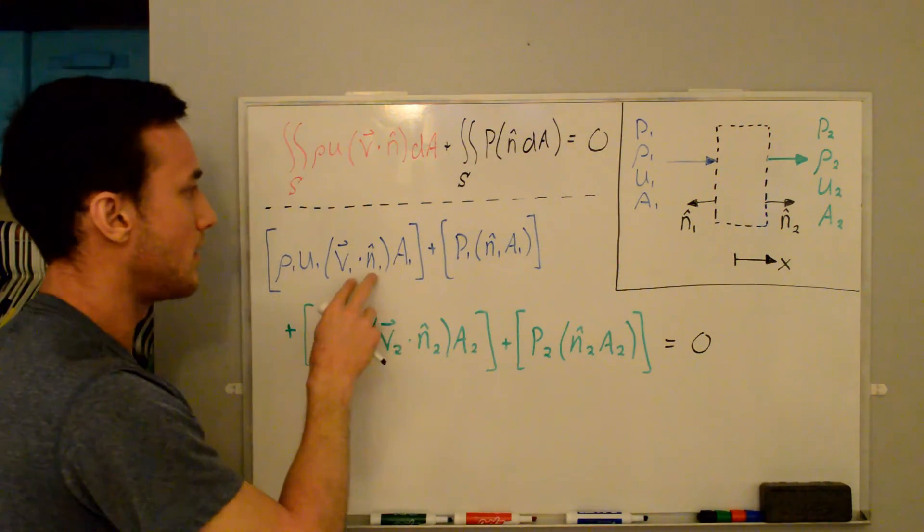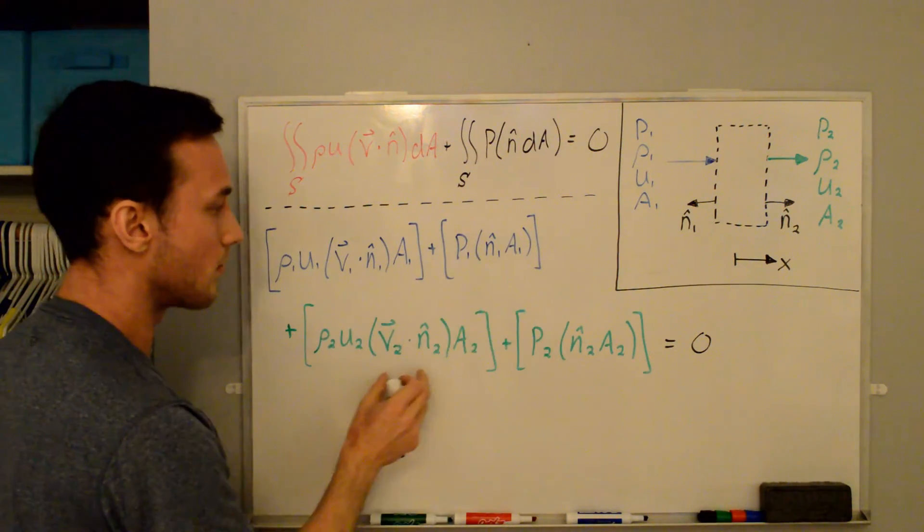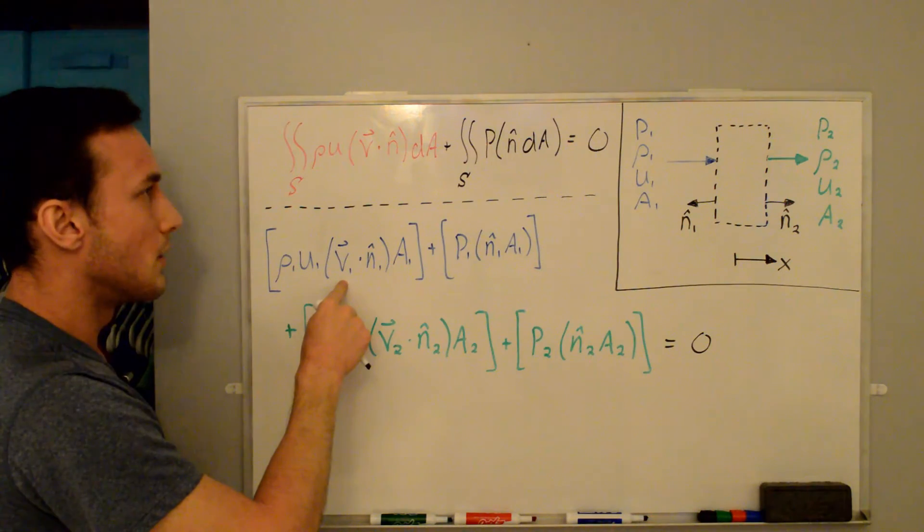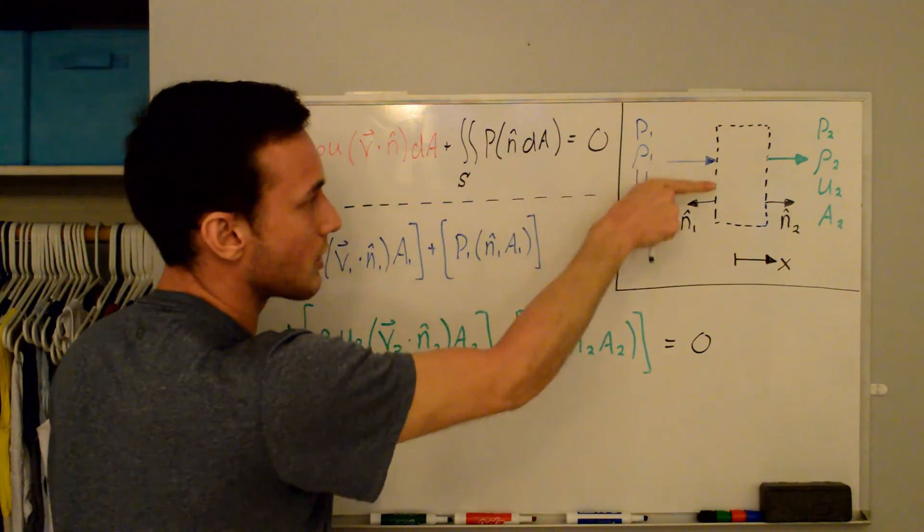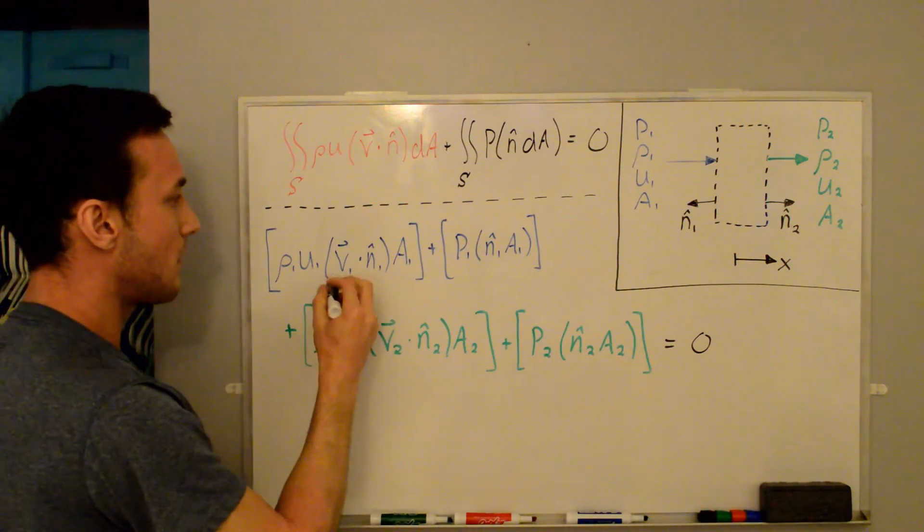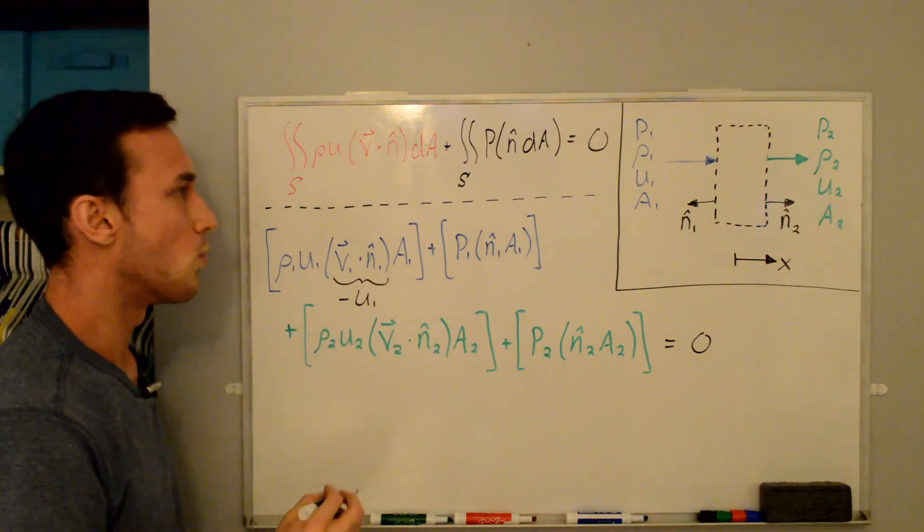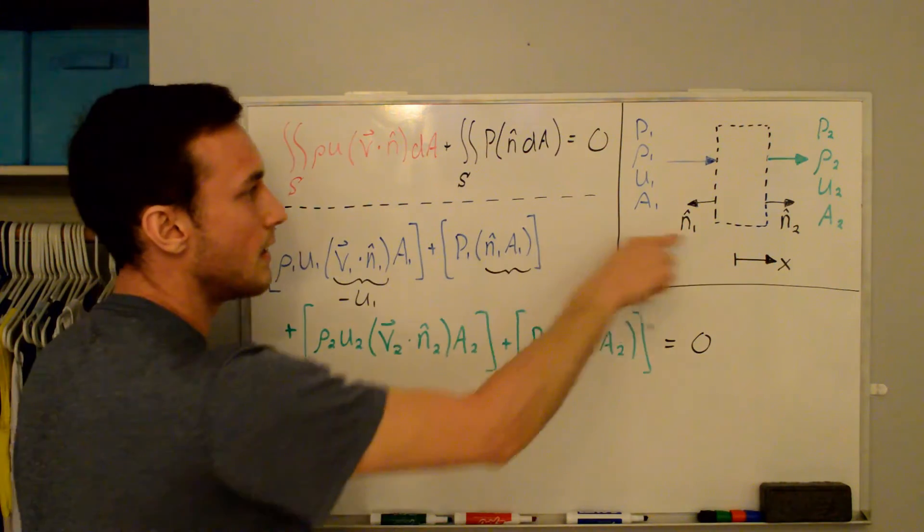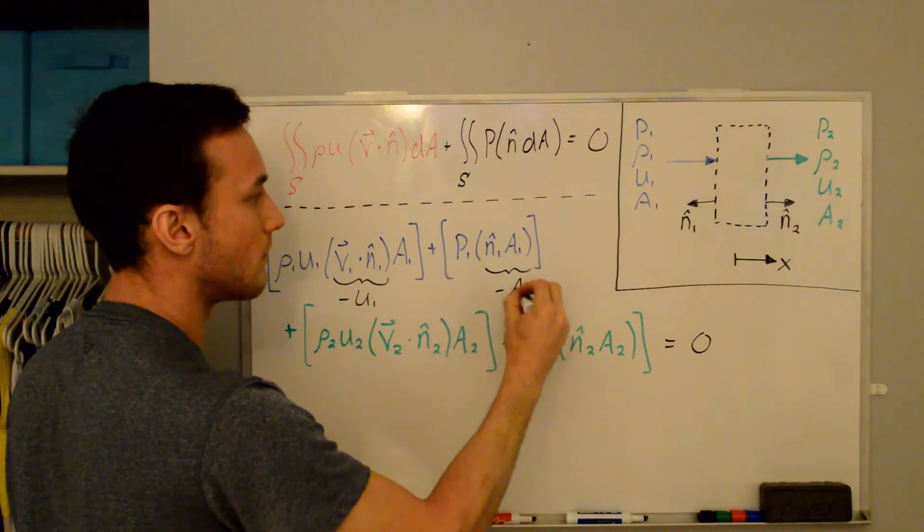Now we can talk about the dot products and the signs of these terms. And so for the dot product, you'll note that the velocity vector is pointing in the positive x direction which is the opposite direction of the outward surface normal. So by that definition, this term here is going to end up being negative u1. Here, because the n hat 1 is pointing in the negative x direction, this term here will be negative a1.